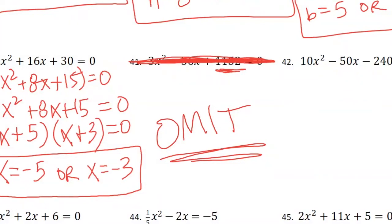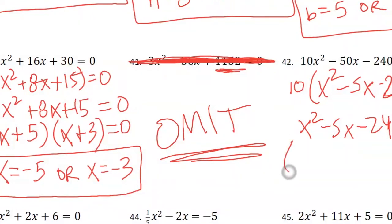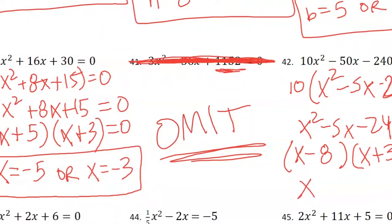Let's see if we have more luck with number 42. We're going to factor out the 10 and divide everything by 10, leaving x squared minus 5x minus 24 equals 0. Two numbers that multiply to negative 24 and add to negative 5: negative 8 and positive 3. Setting those linear binomials equal to 0, I get x equals 8 or x equals negative 3.